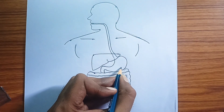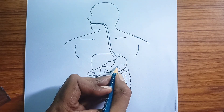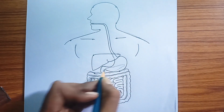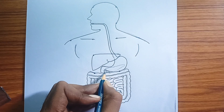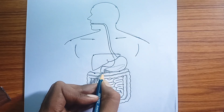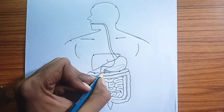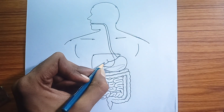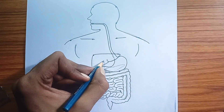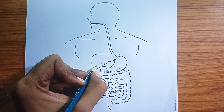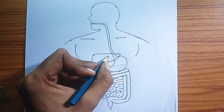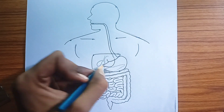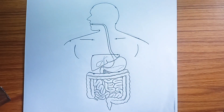Cecum. A pouch connected to the junction of the small and large intestines. Appendix. A small, finger-like projection extending from the cecum, whose exact function is not fully understood, but it's believed to have some immune function.